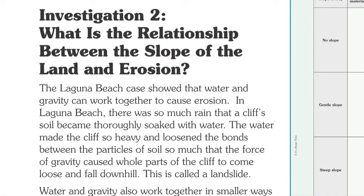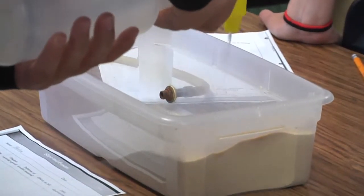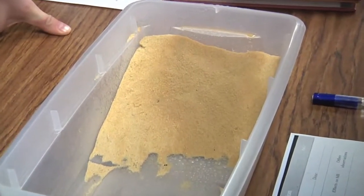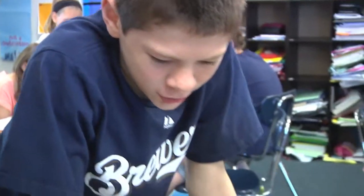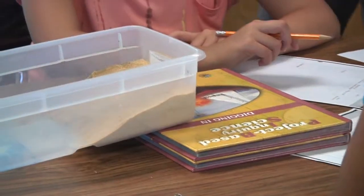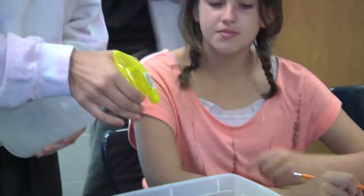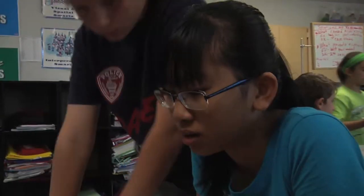In investigation two, looking at the relationship between slope of the land and erosion, students make a hill of moist sand and use a spray bottle to simulate rain. Their first trial has no slope. Then they create a gentle slope by raising the hill five centimeters and repeat the experiment. Finally, they make a steep hill by raising it another five centimeters and record their results.